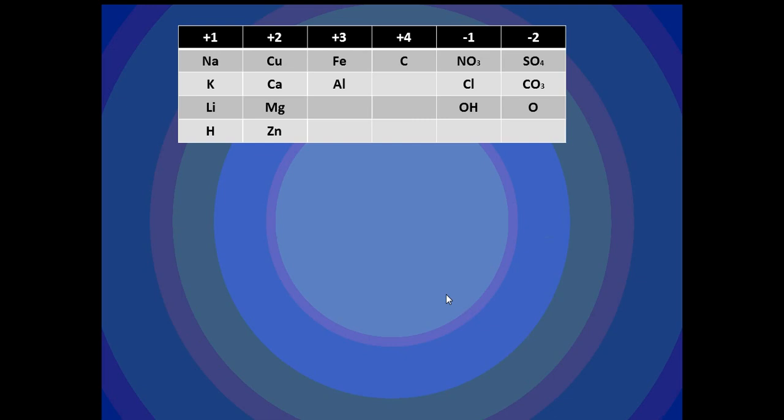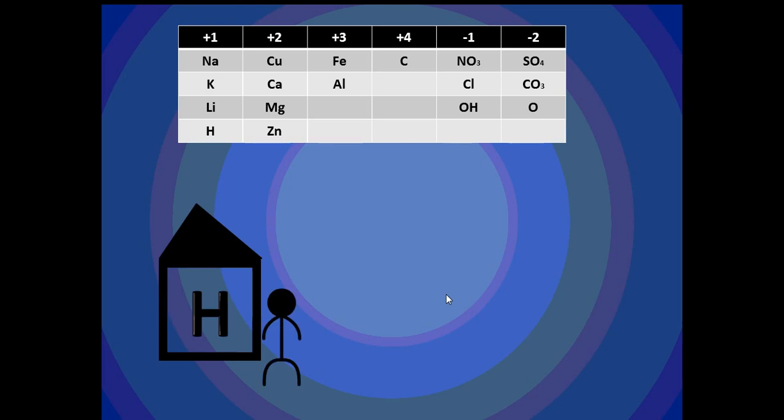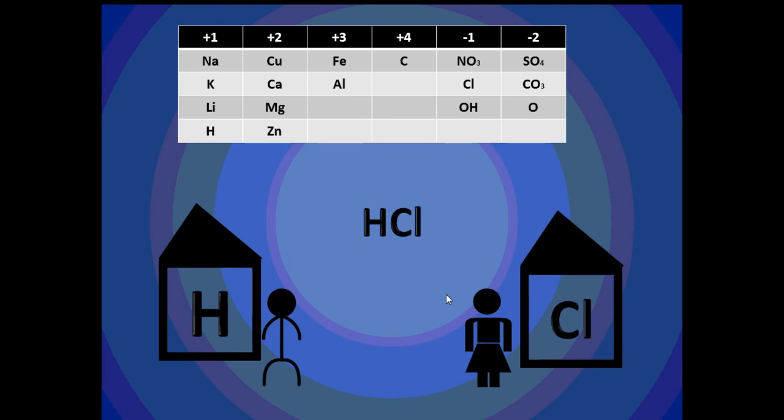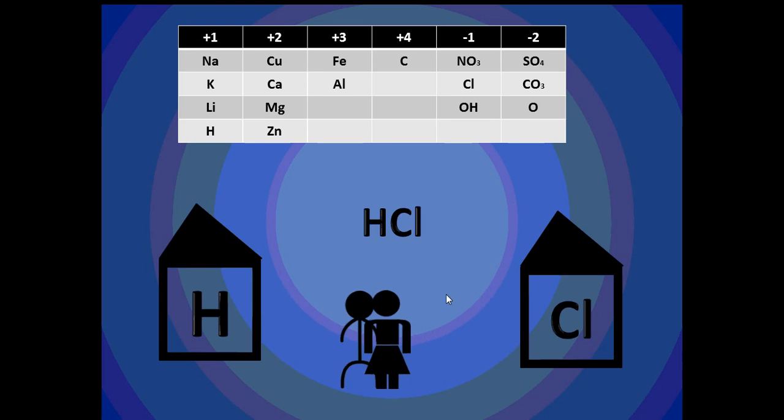So first off, let's start with Hydrogen and Chloride written in symbols like this: HCl. Up the top is the combining powers table. In the house of Hydrogen, there's one guy, and in the house of Chloride, there's one girl. So this is written like that because there's only one house of Hydrogen with one guy, and only one house of Chloride with one girl.